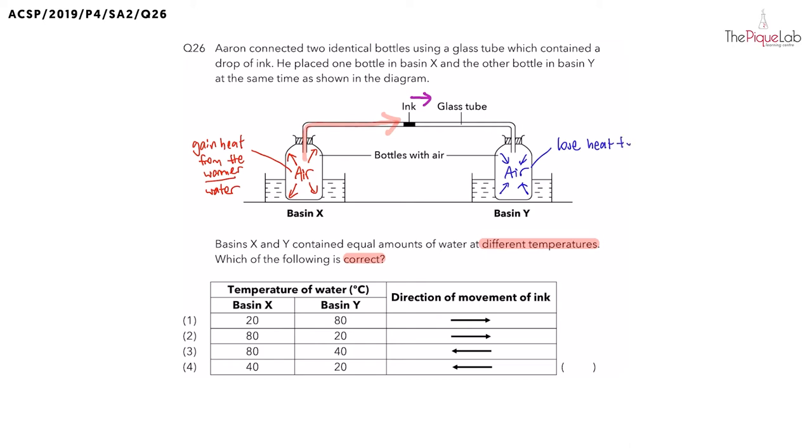The air is going to lose heat to the cooler water in Basin Y, which means the air is going to contract. And this time, the air is going to occupy less space inside the bottle. And this creates a sucking force or a pulling force for the air inside the glass tube. And it will be pulled into the bottle, causing the ink droplet to move to the right.